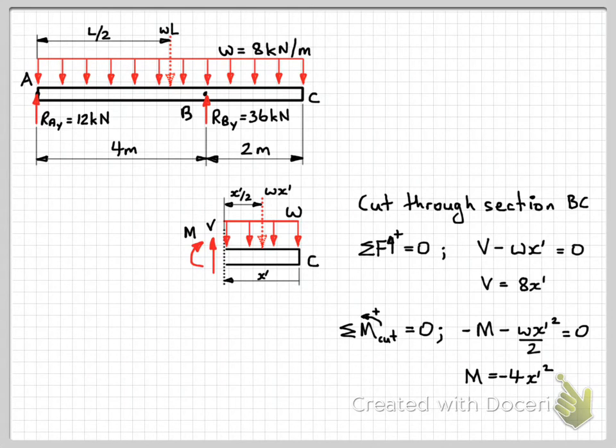So again, in preparation for drawing our shear and bending moment diagrams, let's work out some values. So at end C, where x dash equals zero, we can substitute that into our equation. So V is equal to zero, 8 times x dash, which is zero. And our moment is also equal to zero.